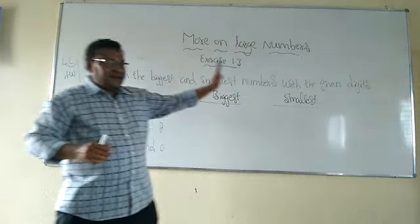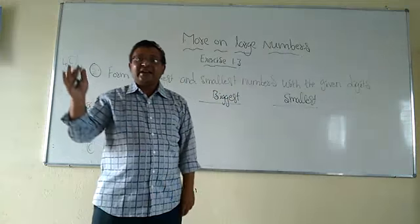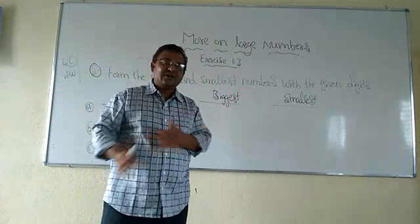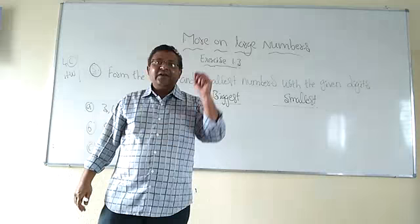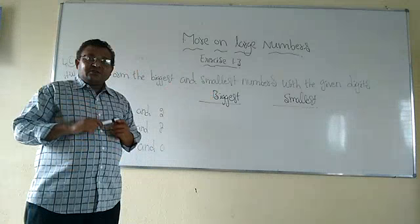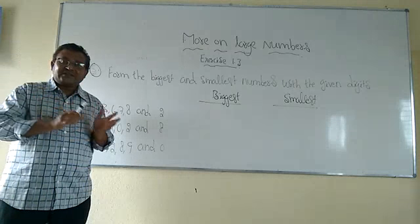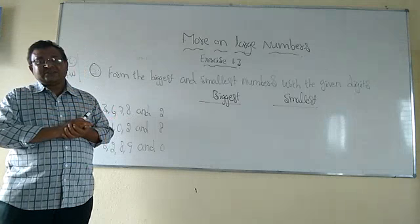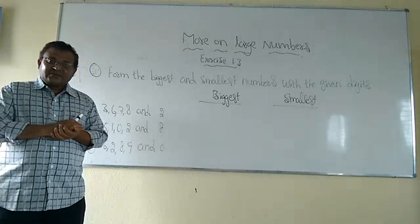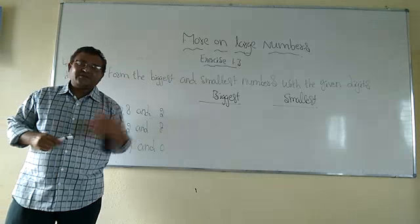Next, coming to write the smallest number, we have to arrange the digits in ascending order — that means the smaller one is first, next bigger than that one, next bigger than that one, and so on. One more thing to remember: when writing the smallest number, if zero is one of the given digits, then you should not write zero first — because zero doesn't have any place value and face value. So skip that zero and write the next smallest one first.